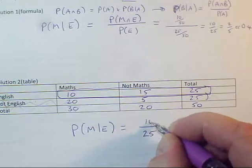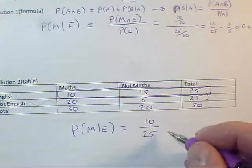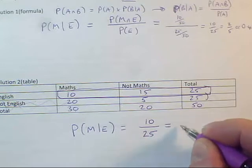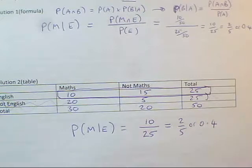So there are just these 10 students, out of the students who study English, who also study maths. So the conditional probability is 10 over 25, which once more is 2 fifths, or 0.4. And we're done.